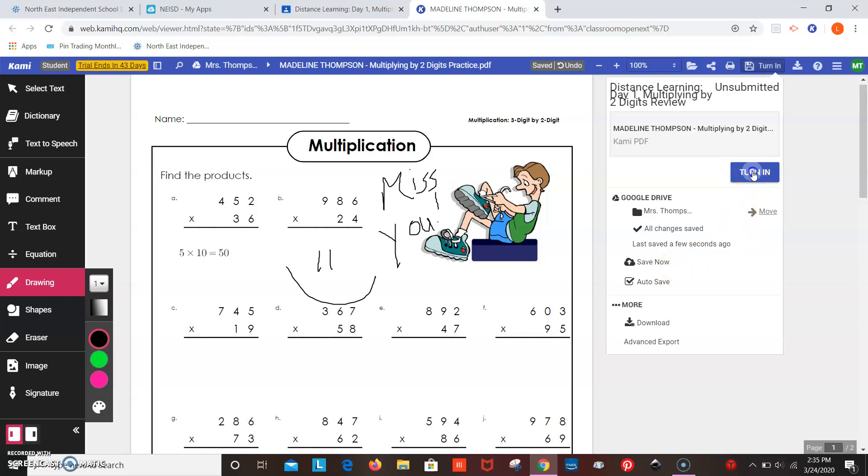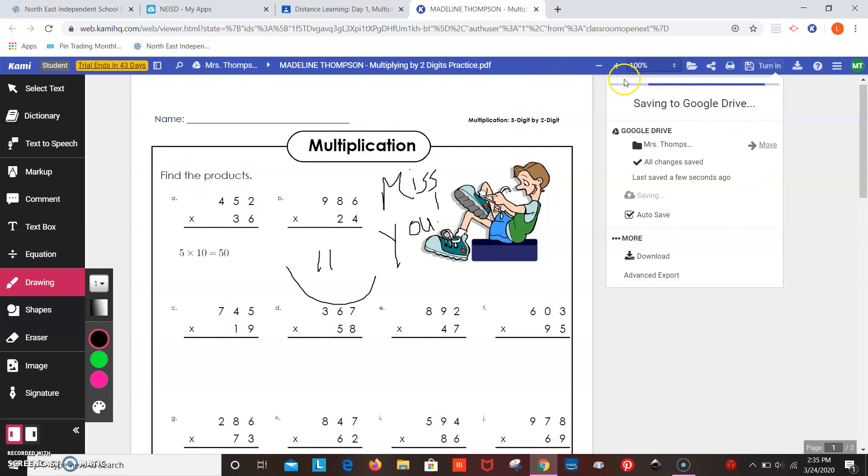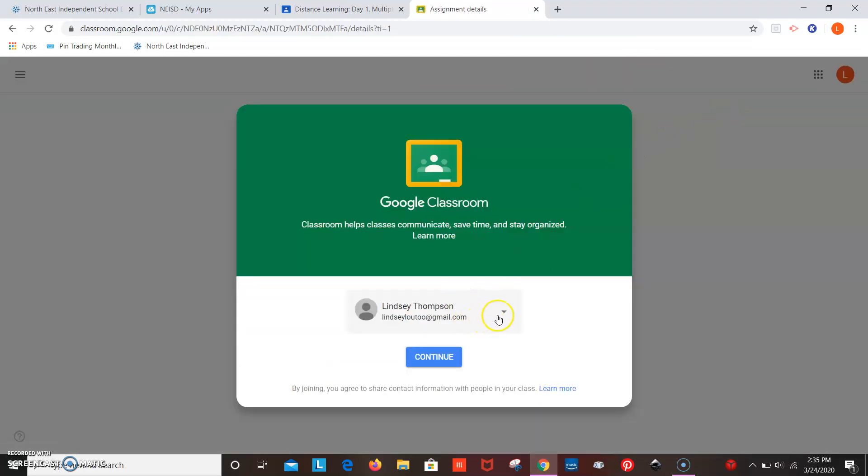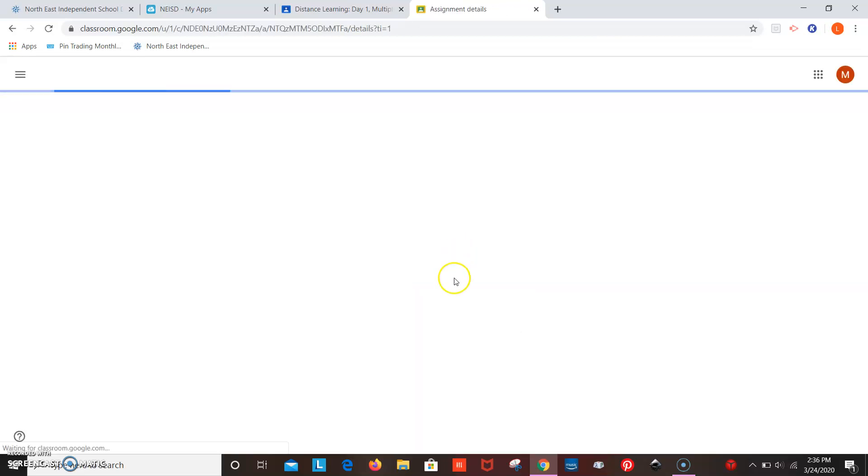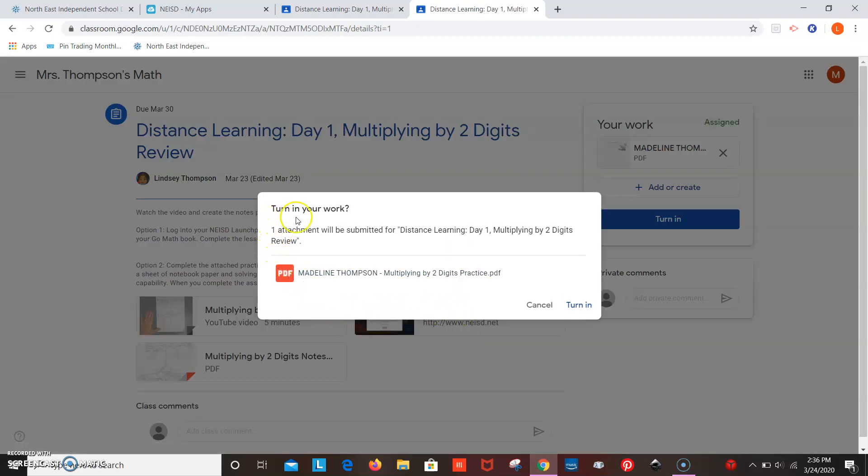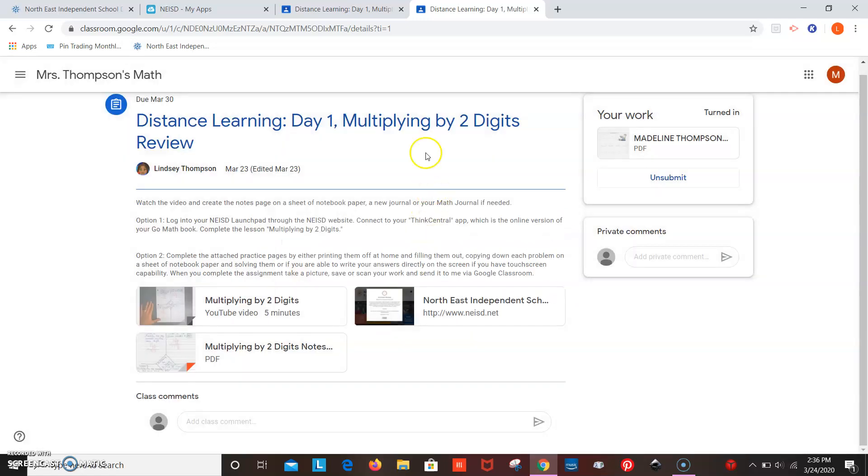And then you're going to click turn in and it's going to load and it's saving to your Google drive. So you want to make sure if you've got more than a couple of you guys are sharing devices, make sure it's on your account. So I'm going to choose her account and it says, turn in your work. One attachment will be submitted for distance learning day one multiplying by two digits review. And it's got your assignment and you click turn in.